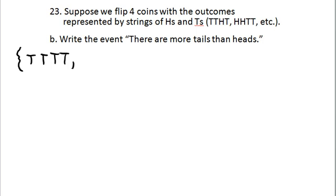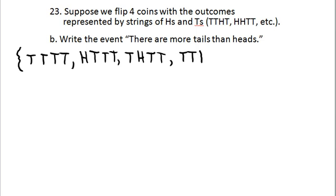So how many ways can you get three tails? You could have the first coin be a head but the rest tails. You could have the second one be a head but the rest tails. You could have the third one be a head but the rest tails. Or you could have the last one be a head but the rest tails. Those are the only five possibilities.